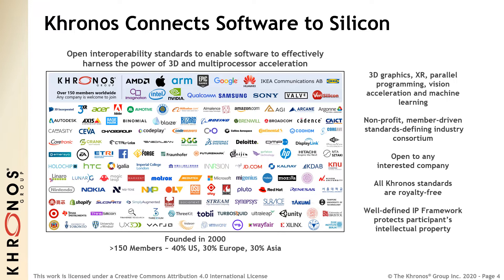Khronos is an open standards consortium providing a safe place for the industry to cooperate, to create interoperability standards, to enable applications to access the power of silicon acceleration in domains such as 3D graphics, virtual and augmented reality, and parallel computation. We are a non-profit organization and all the standards that we create are open and royalty free for the industry to use. We have been working on standards for 20 years and have almost 160 members now.